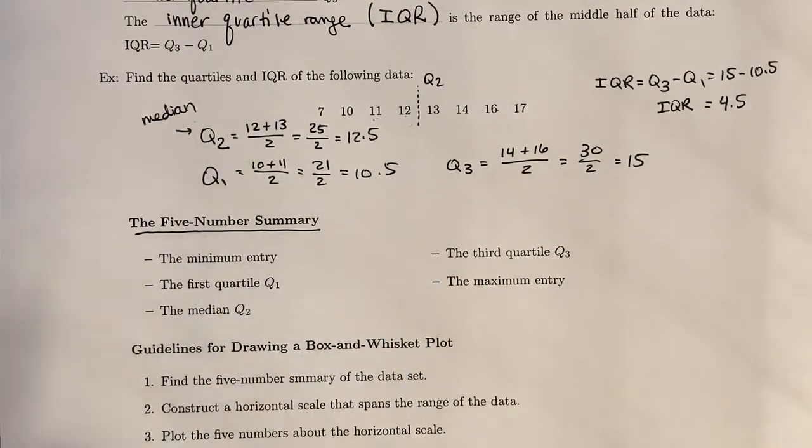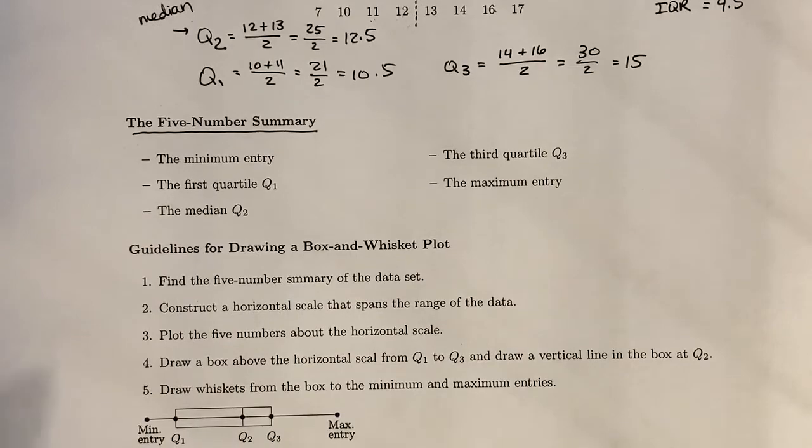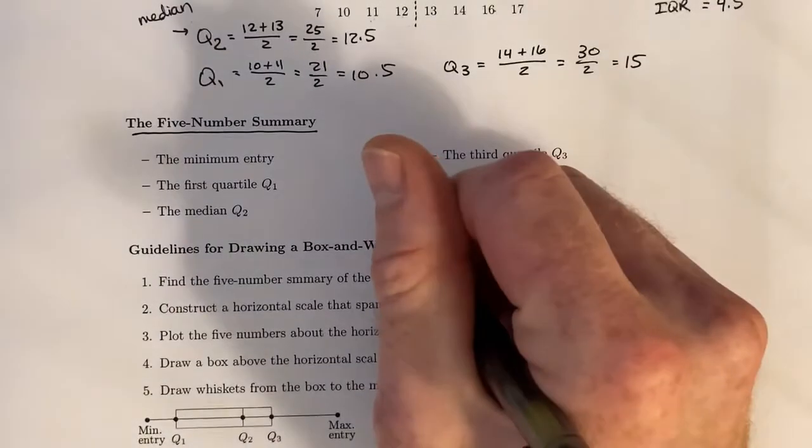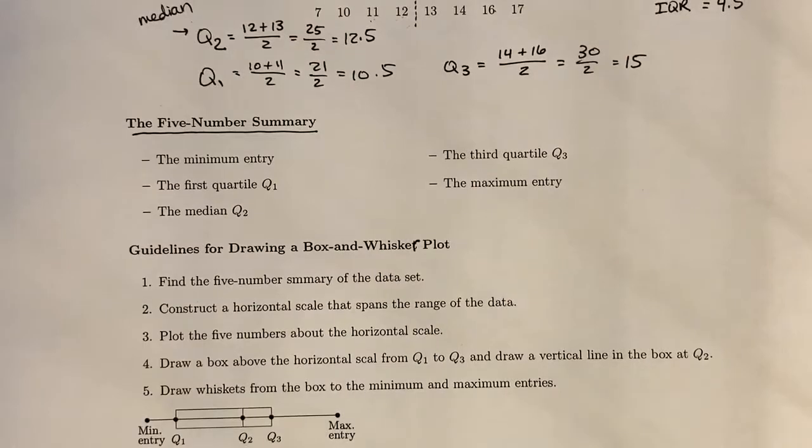These five numbers allow us to create what is called a box-and-whisker plot. First step is to always find the five-number summary of the data set. Once you have those five numbers, you construct a horizontal scale that spans the range of the data. You look at the range of the data, which is the maximum value minus the minimum number, and you make sure that you have a copy of the number line that at least has that range spread out on it.